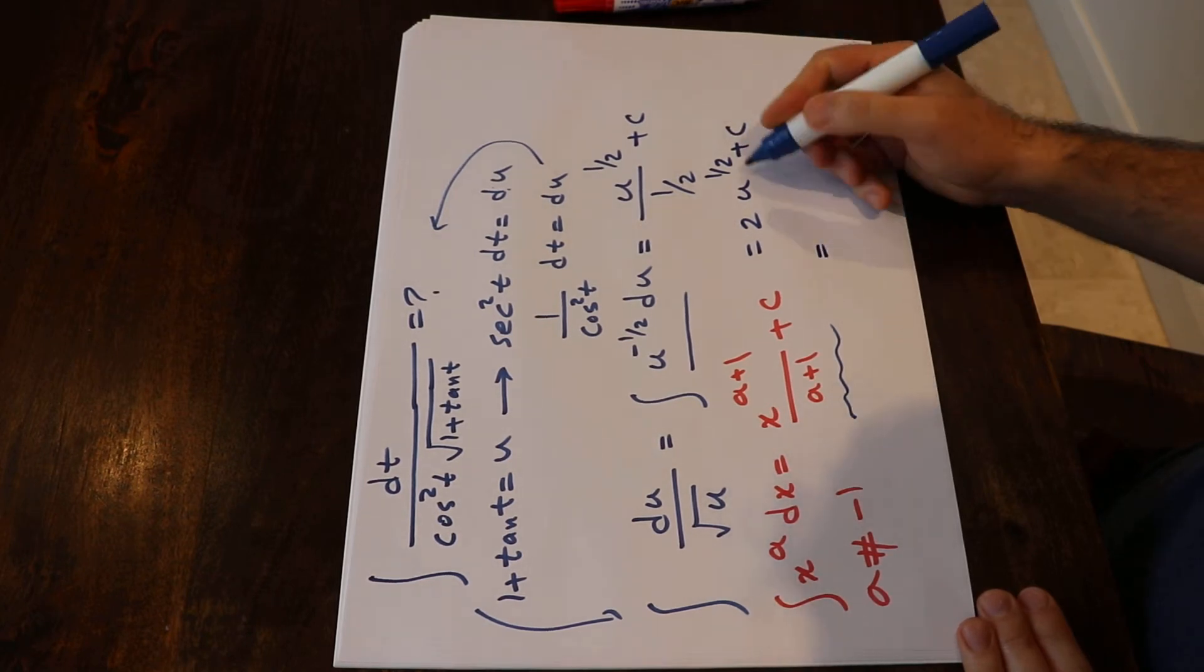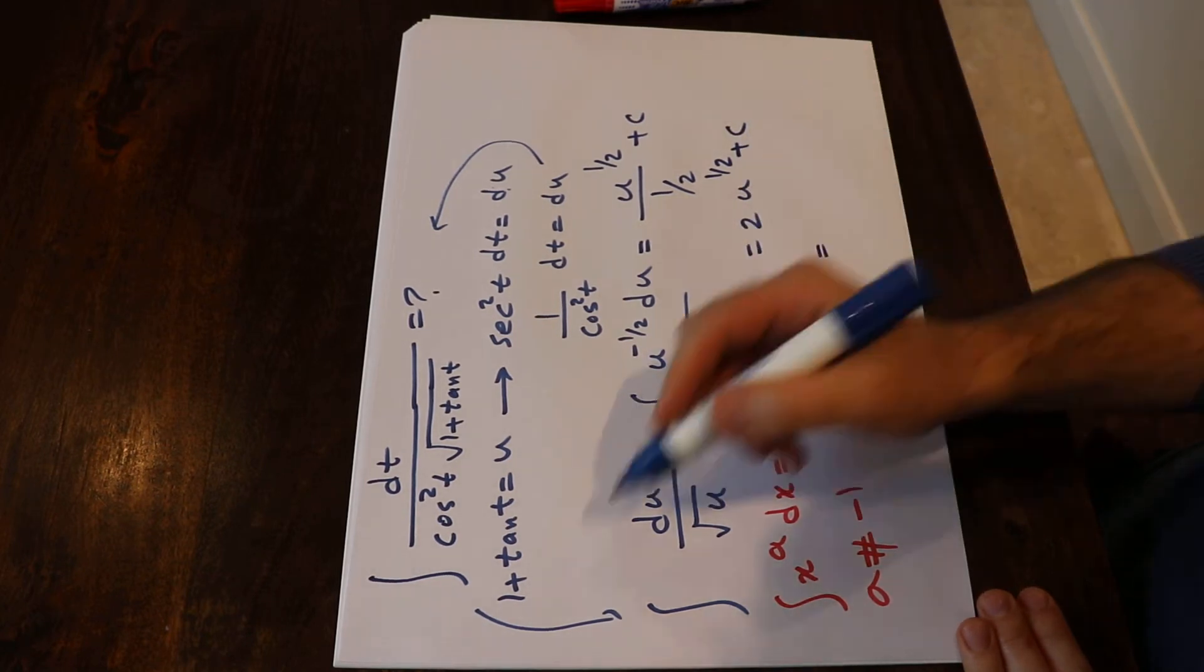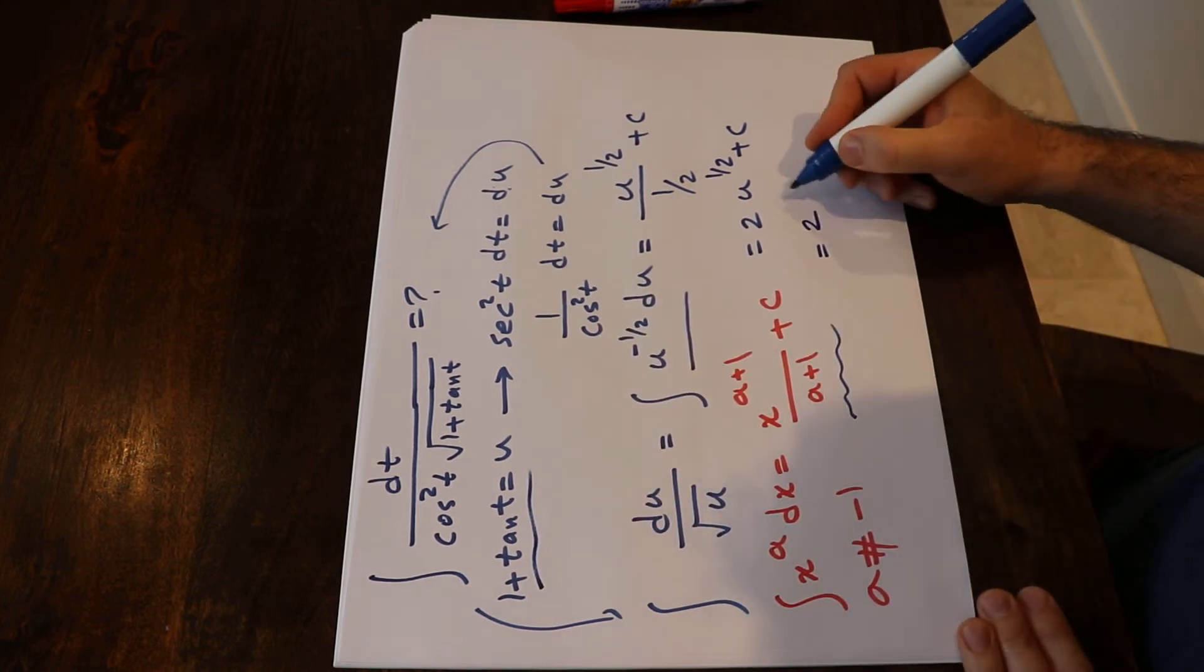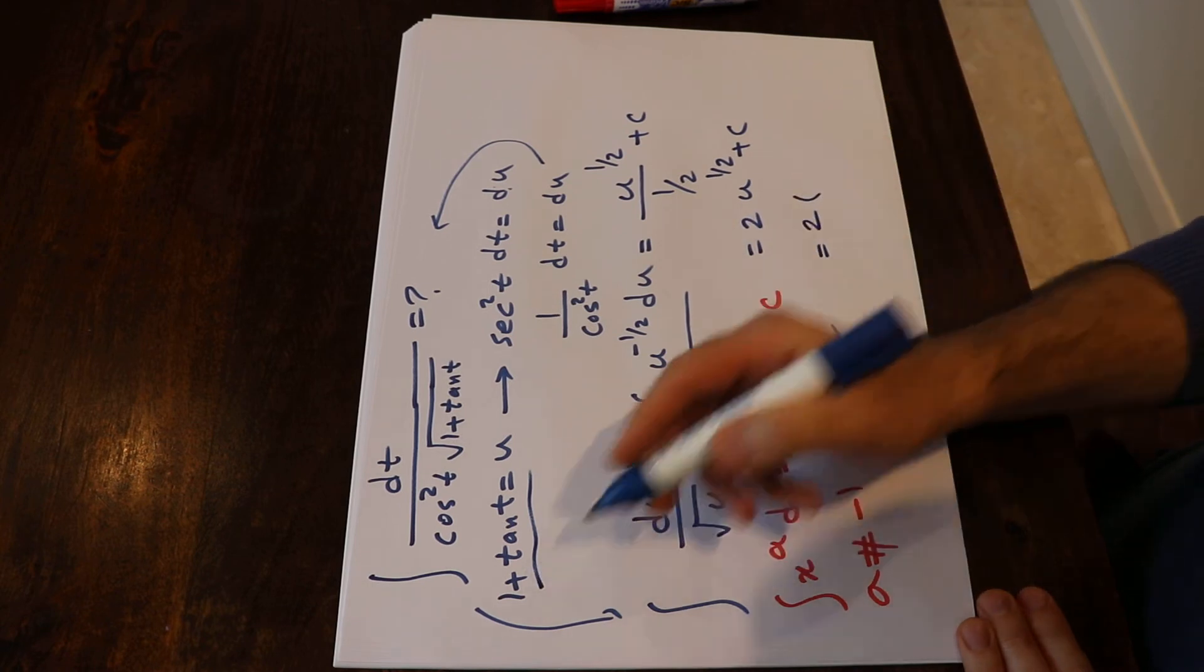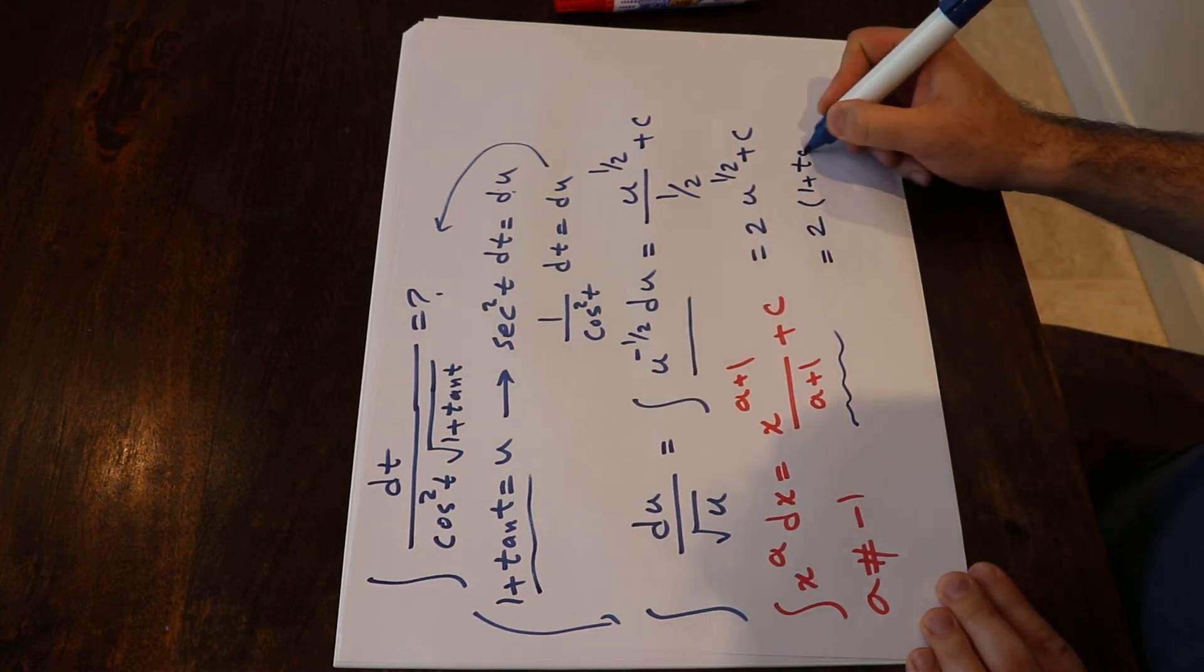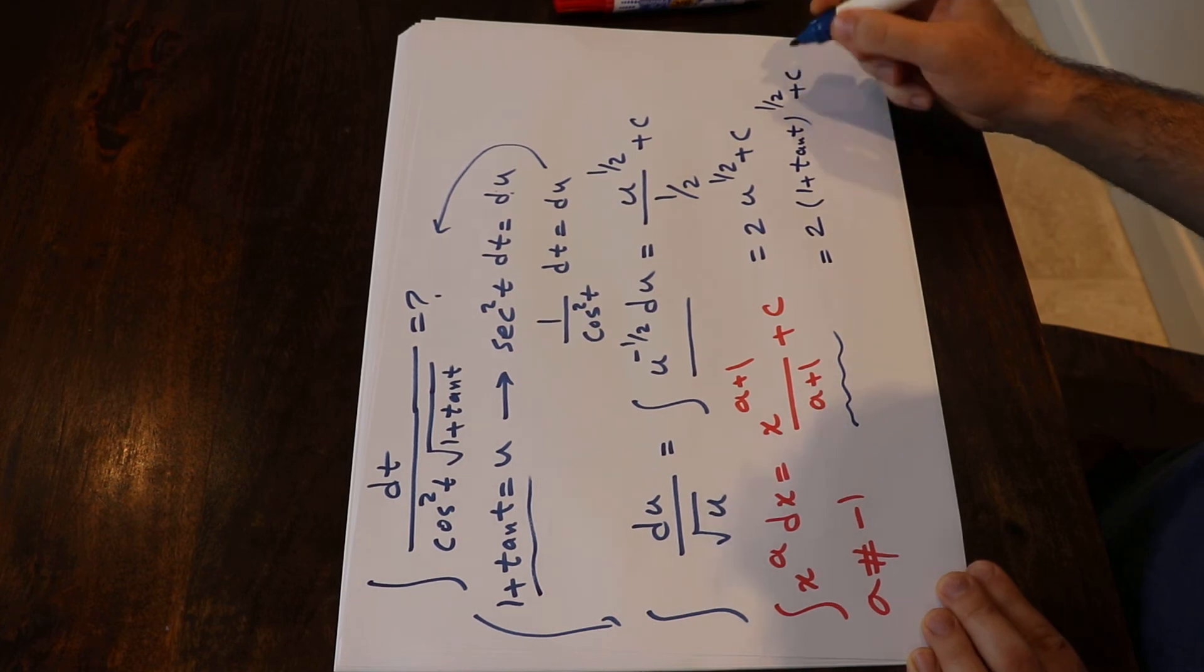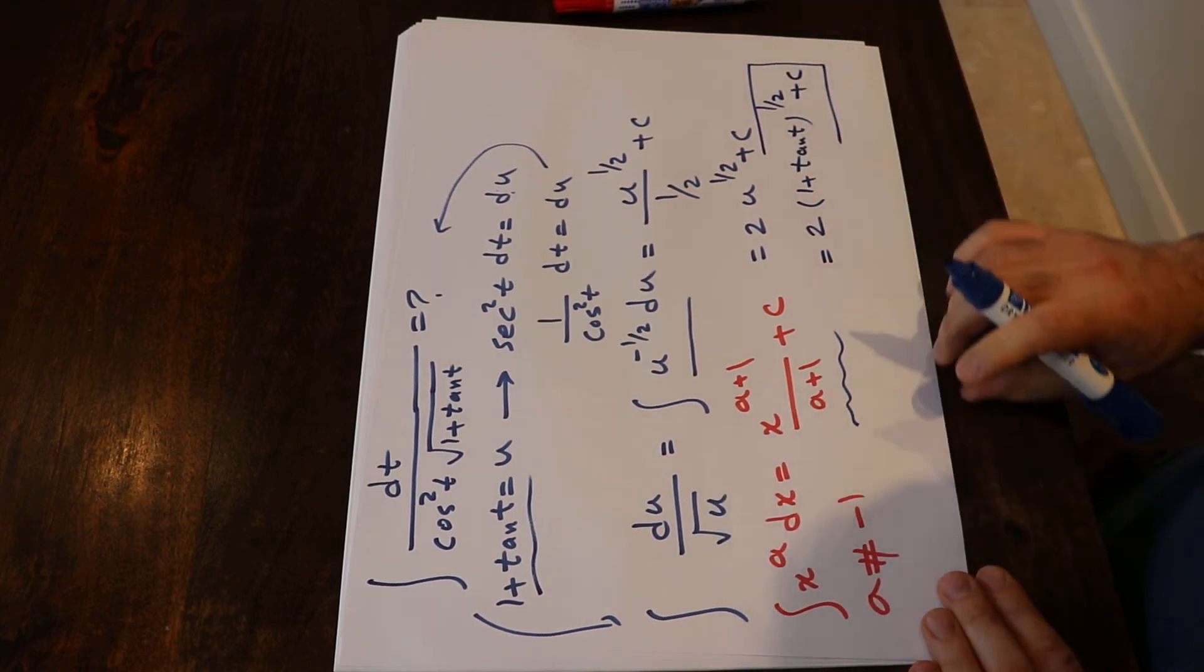At this stage all you need to do is substitute the value of u by the definition you had at the beginning, so that will be equal to 2 times, instead of u I put 1 plus tangent t, with the power of 1 divided by 2 plus c, and that is the solution to this integral.